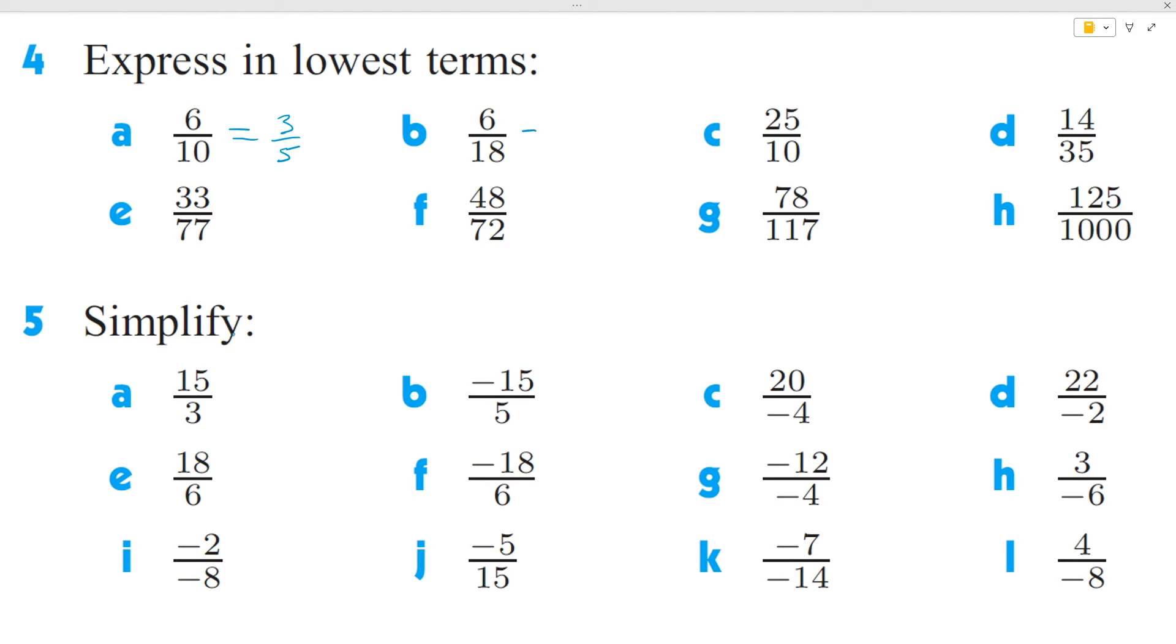Looking at question B, we can note that 6 and 18 both contain a 6, and therefore if I divide the top and the bottom by 6, I get a 1 at the top, and then 18 divided by 6 is going to be a 3.